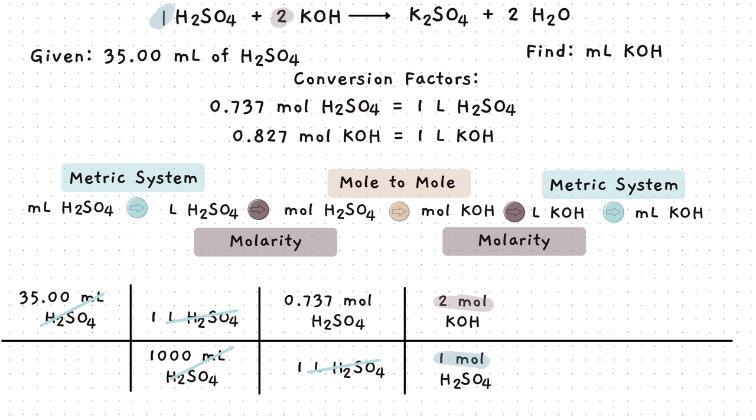Our moles of sulfuric acid cancel out. We can now use the molarity of potassium hydroxide and place the moles across from each other so they can cancel and the liters on top. Next, using the metric system, we'll place the liters on the bottom so they can cancel and the milliliters on top since that's what we're looking for.